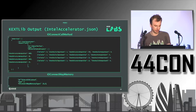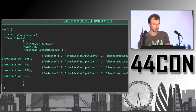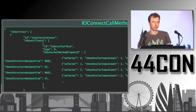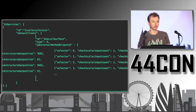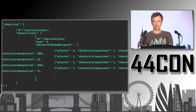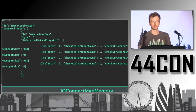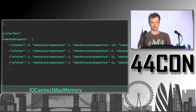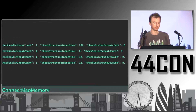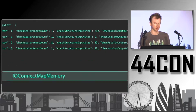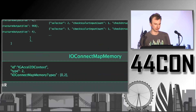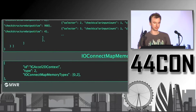Here's an example of IOConnectCallMethod arguments being converted to JSON for the Intel Accelerator driver. You can see for the IO user client the different selector numbers — the methods you can call in the kernel — the arguments, the number of arguments it takes, the size of the data, the number of output arguments, and so on. You can also see it pulls out things like the shared memory mapping side of things.